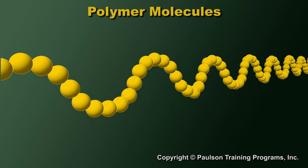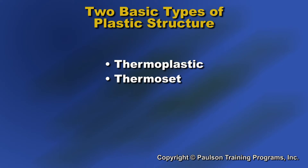Our graphics show molecules millions of times larger than they really are. Now let's look at the basic types of plastic structure: thermoplastic and thermoset.